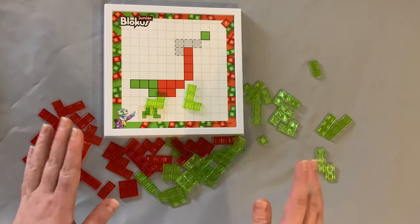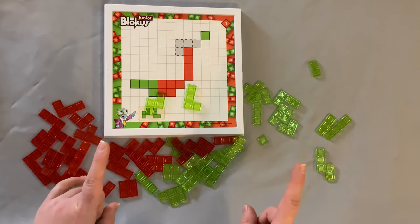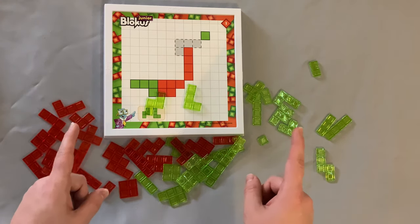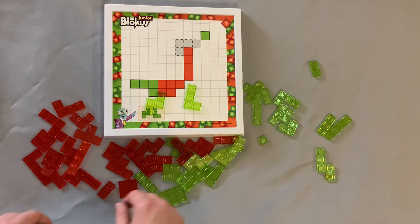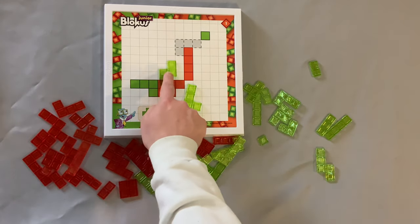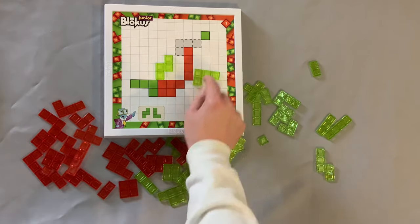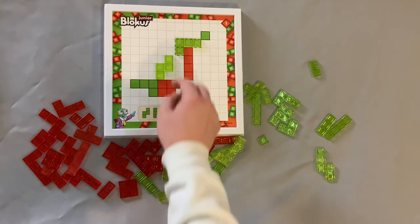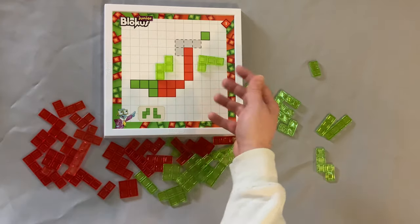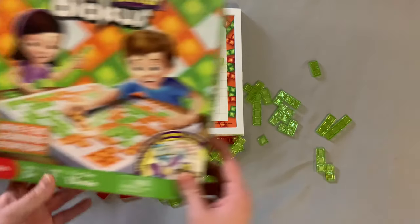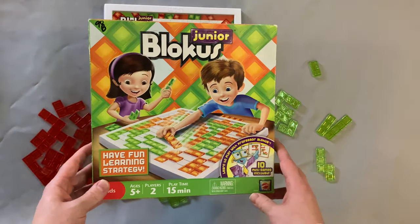If you ever get stuck a solution for each mini game appears in the rule booklet and you can check that if you need. Also if you just want to see how this one works I can show you exactly how it works right now, which is that piece would go here and then this piece is right here. In fact the first one has this little hint here to help you along but as you progress there will be no hints. That is how you play Junior Blokus, go have some fun.